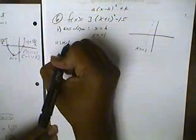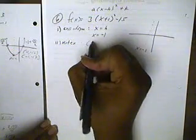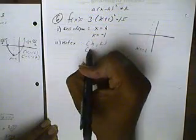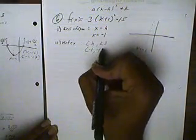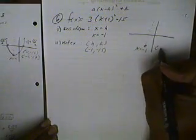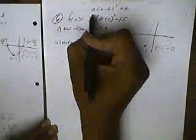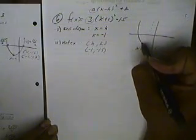Secondly, the vertex. The vertex is found by taking the combination of h and k and treating those as x and y. H was negative 1, and k is this number here, which is negative 15. And that's our vertex: negative 1, negative 15. Looking at the orientation, a is positive 3, so the orientation will be upward. Let's go ahead and draw in our parabola at this point.